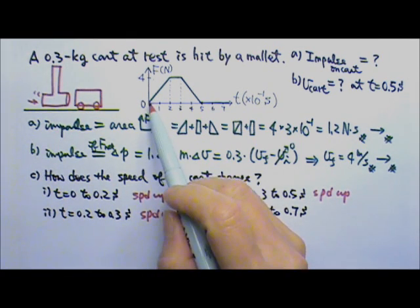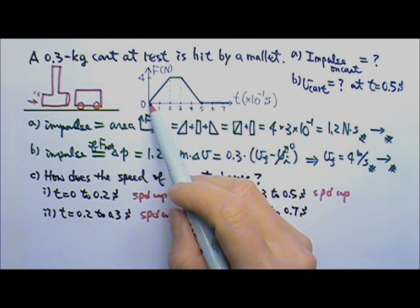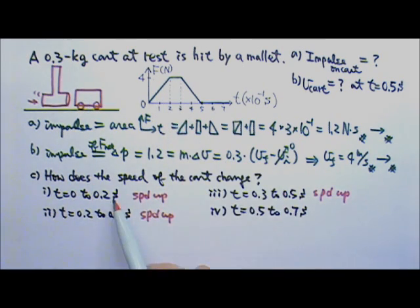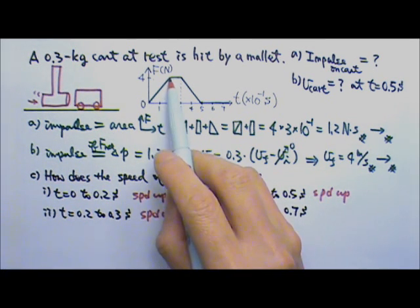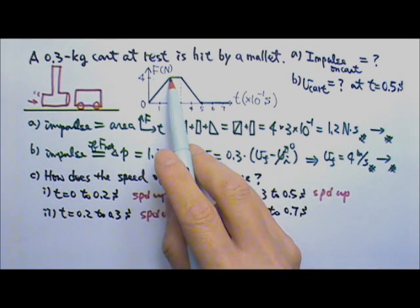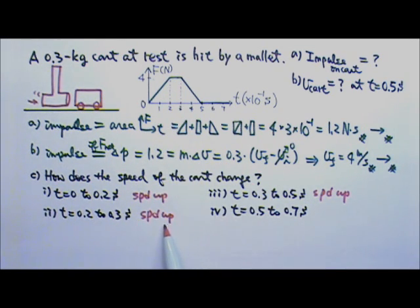It's just that for the first 0.2 seconds, the force is increasing. That means the acceleration increases. So for this part, the cart speeds up at an increasing rate. For this part, the force is a constant. So it's a constant acceleration. That means the cart speeds up at a constant rate.